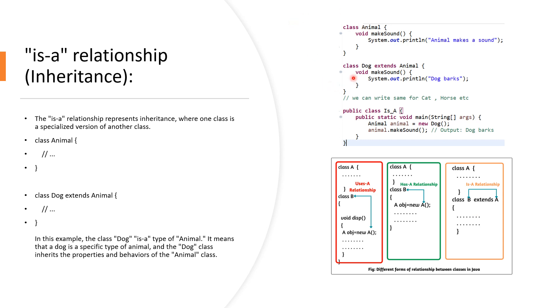In this example, the class Dog is a type of Animal. It means that a dog is a specific type of animal, and the Dog class inherits the properties and behaviors of the Animal class.